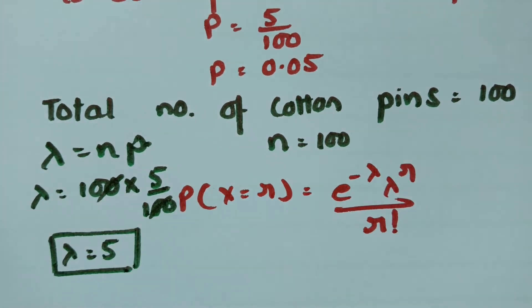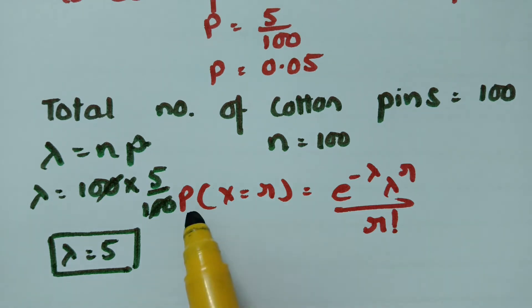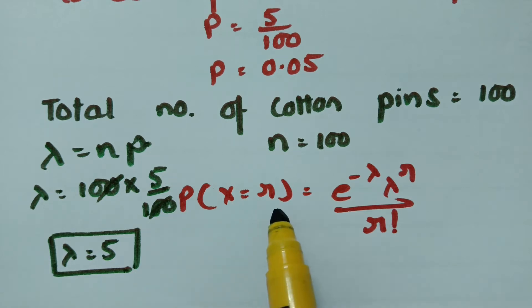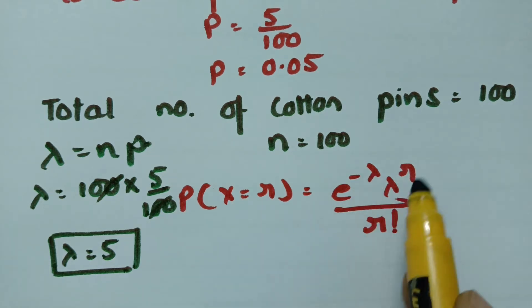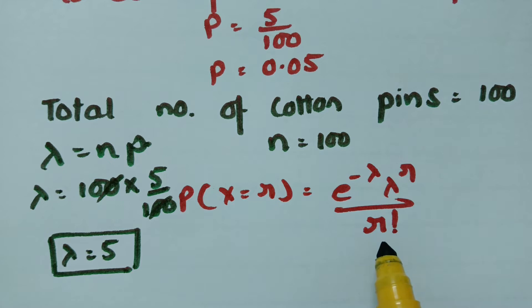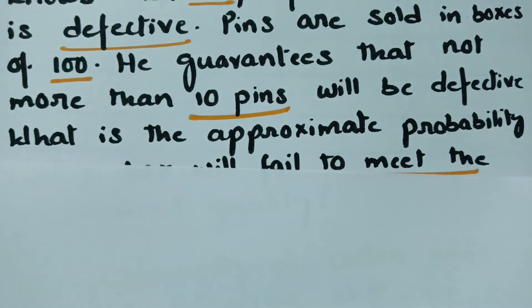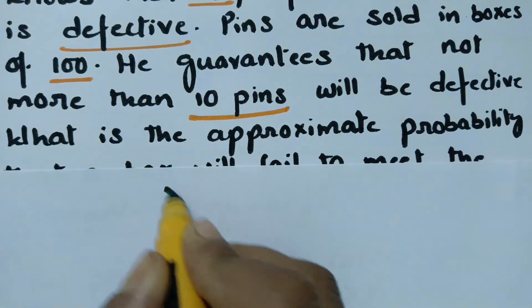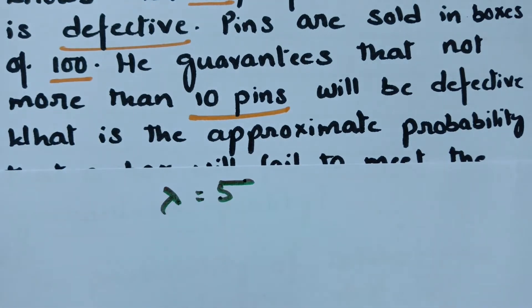Since lambda is given, we select the Poisson distribution. According to the Poisson distribution, the formula is: P(X = r) = e^(−λ) × λ^r / r!. Here lambda is equal to N into P, which gives lambda = 5.